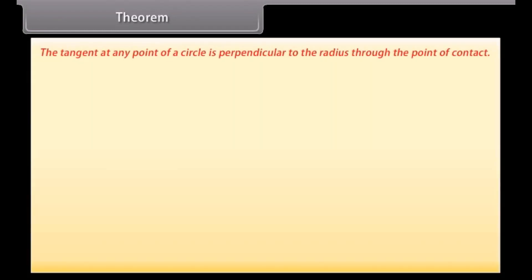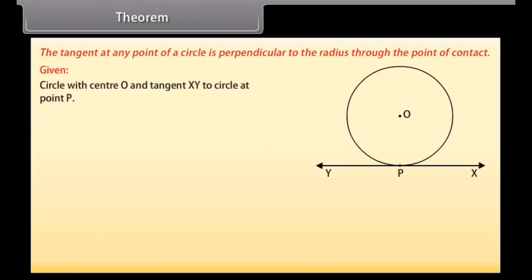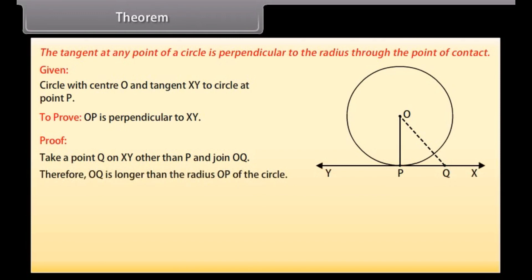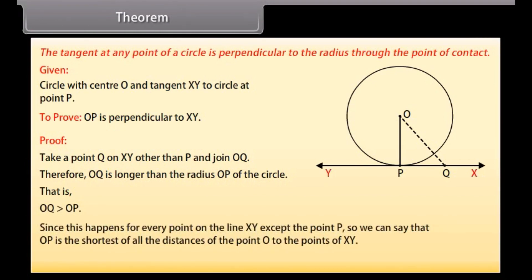Theorem: The tangent at any point of a circle is perpendicular to the radius through the point of contact. We are given a circle with center O and a tangent XY to the circle at a point P. We need to prove that OP is perpendicular to XY. Take a point Q on XY other than P and join OQ. The point Q must lie outside the circle, because if Q lies inside the circle, then XY will become a secant and not a tangent. Therefore, OQ is longer than the radius OP of the circle, that is OQ is greater than OP. Since this happens for every point on the line XY except point P, OP is the shortest of all distances from point O to points on XY. Hence, OP is perpendicular to XY.